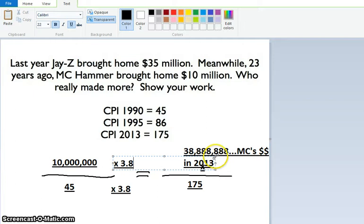And so Jay-Z, if he was going to keep up with MC Hammer, he should be making $38 million and some $888,000. But he's not. So what's happened is inflation, the prices of things, have outpaced the nominal wage that Jay-Z earns.